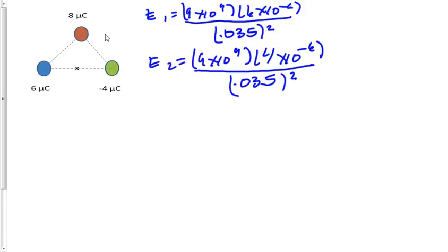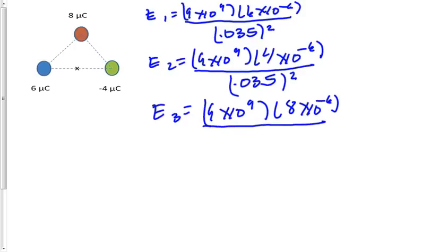Electric field 3 will be because of the 8 microcoulomb charge. So electric field 3 equals 9 times 10 to the 9th. And we'll multiply this by 8 times 10 to the minus 6, divided by 0.0606 squared.